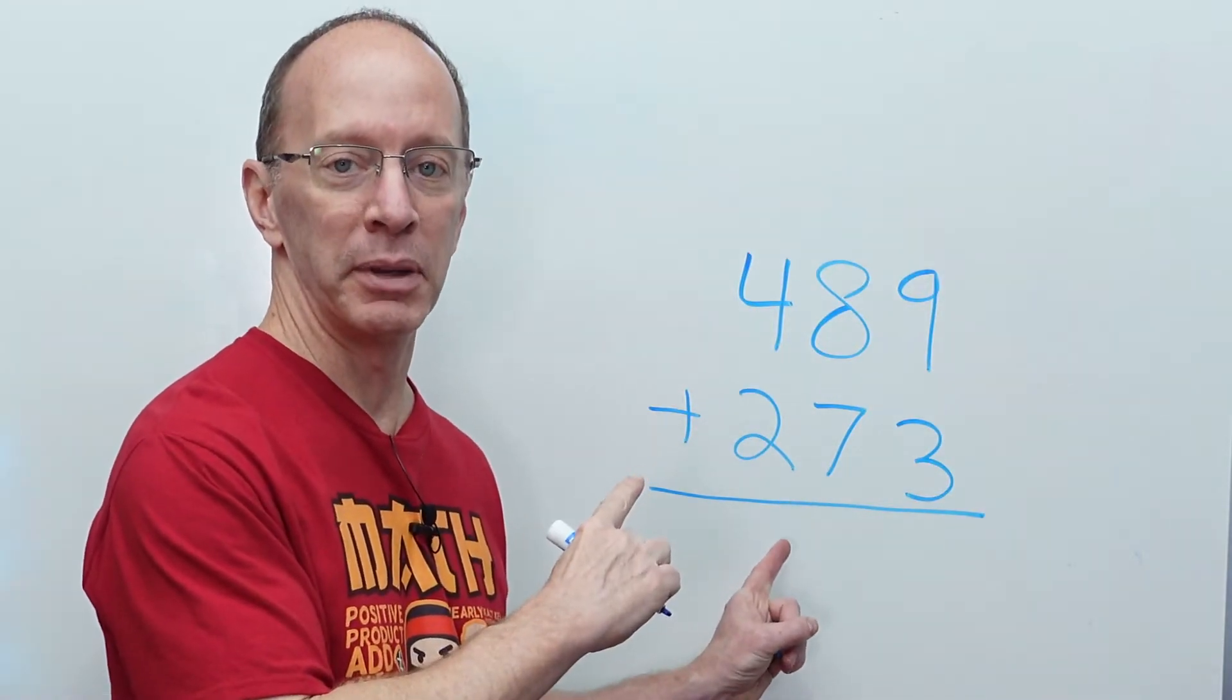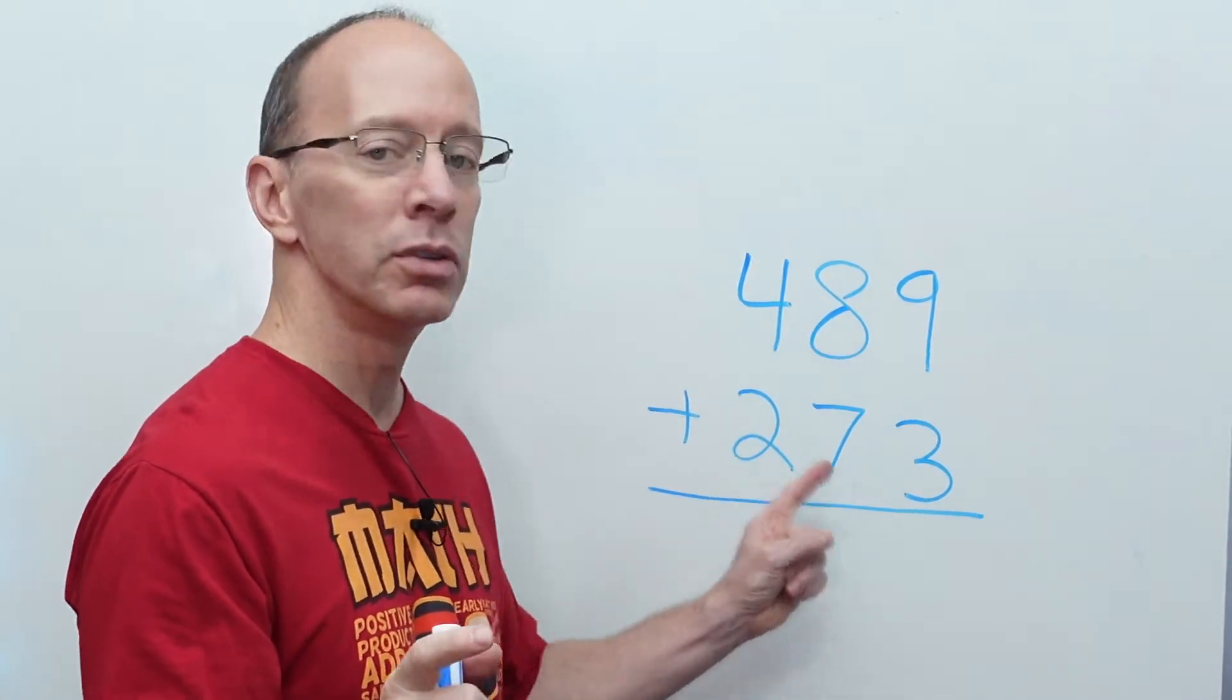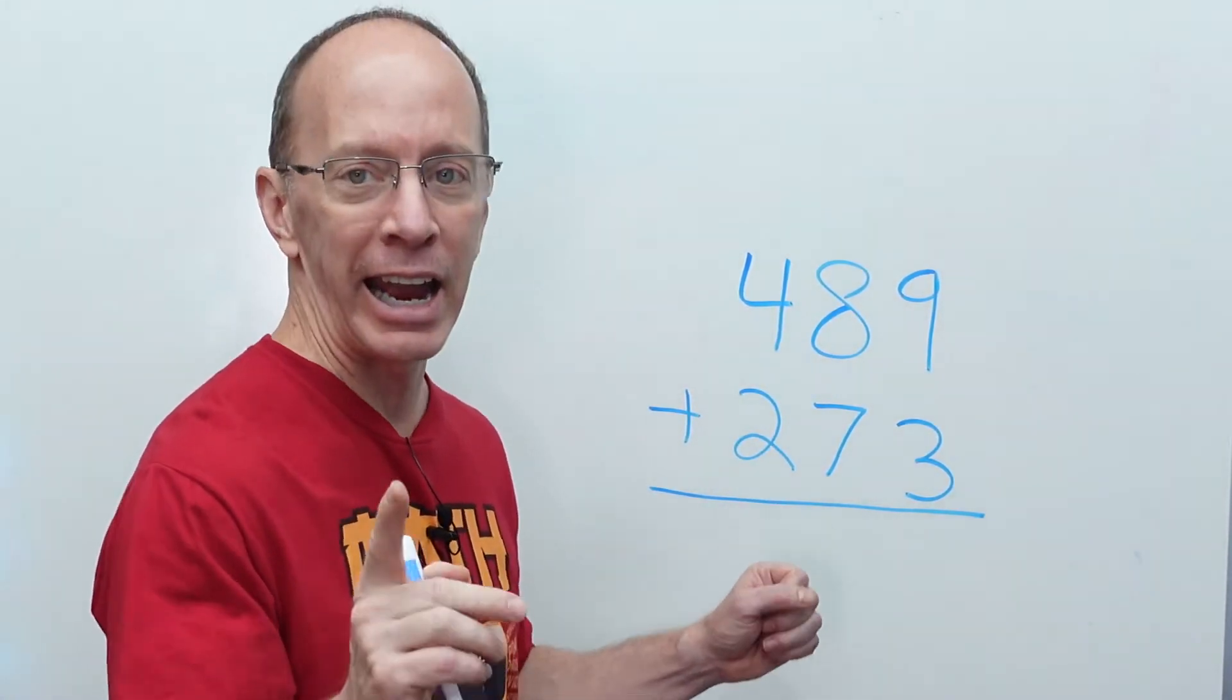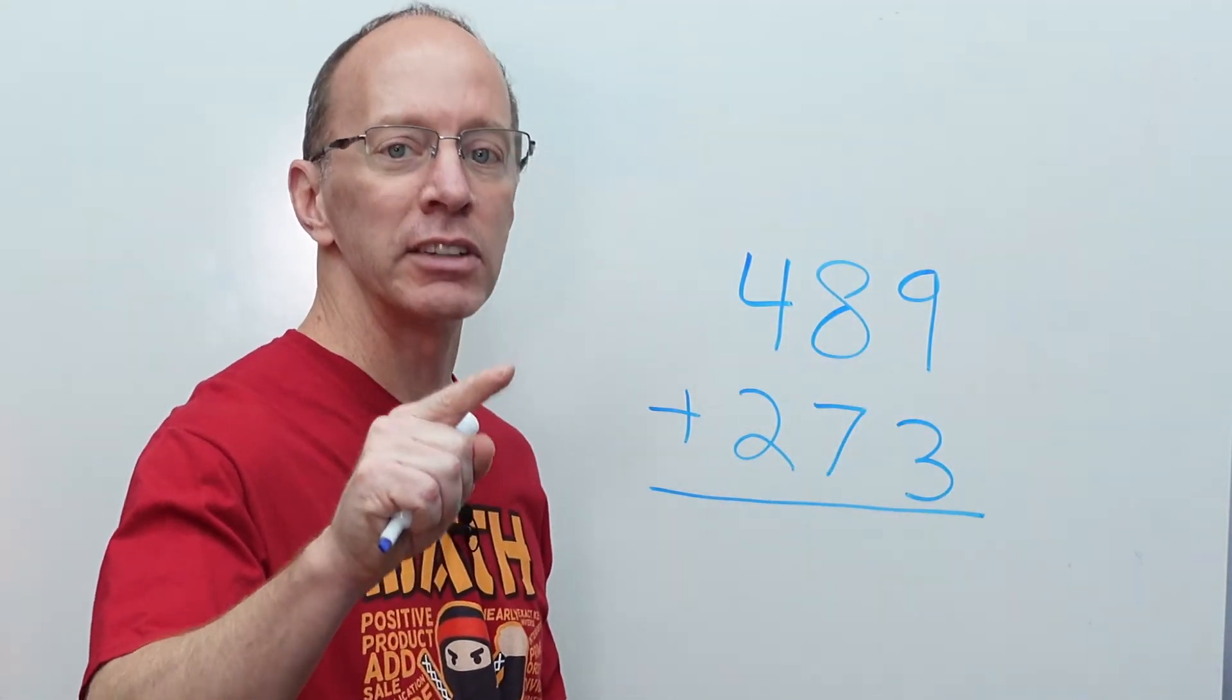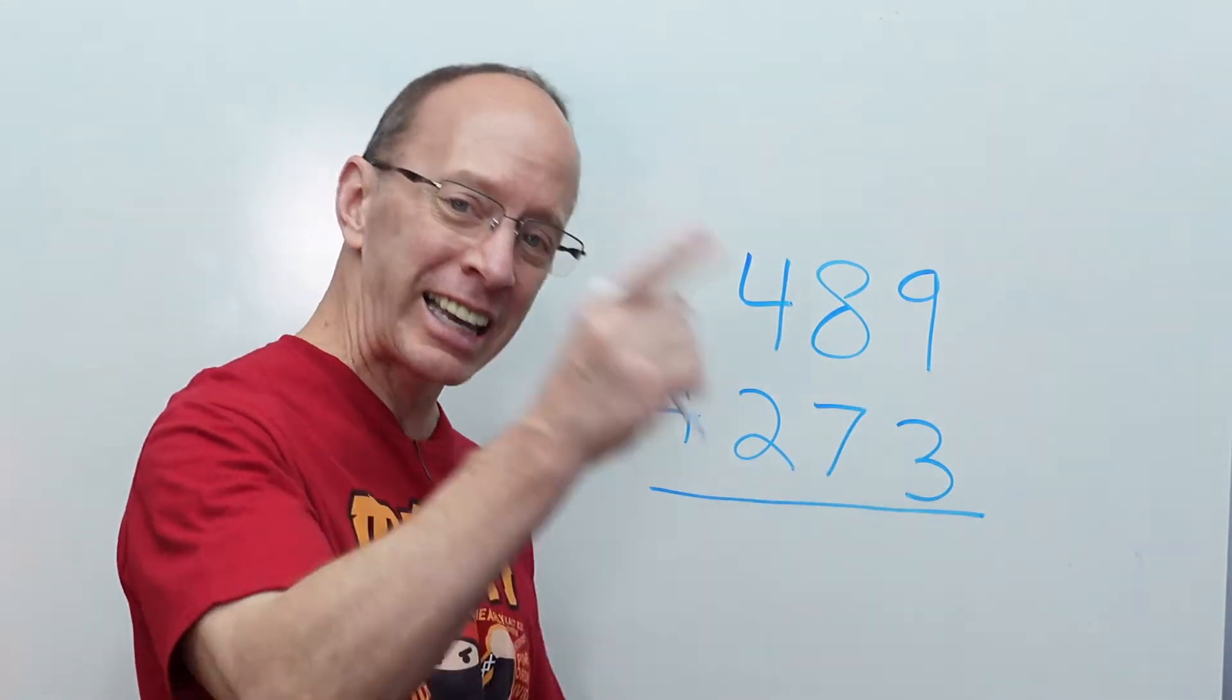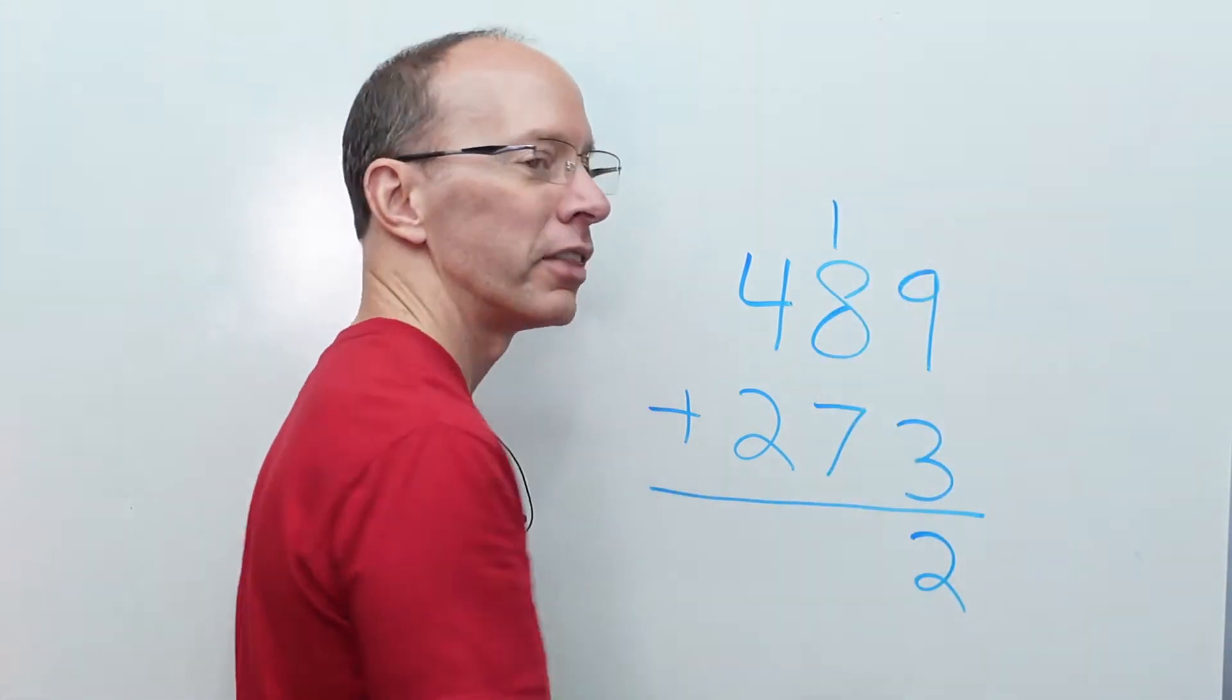Whoa! This is getting to be a bigger number. We have 489 plus 273. Ready to do it? I know you are. Let's do it. Add the ones first. 9 plus 3. What is it? 9, 10, 11, 12. All right. So, I put the 2 here, and I carry the 1. Regroup right over there.